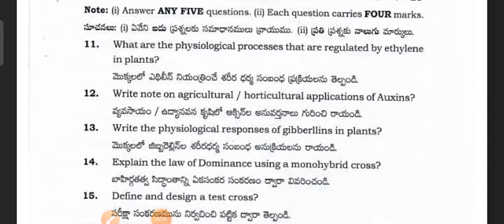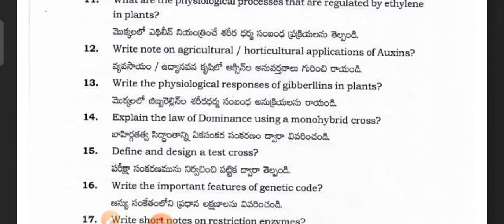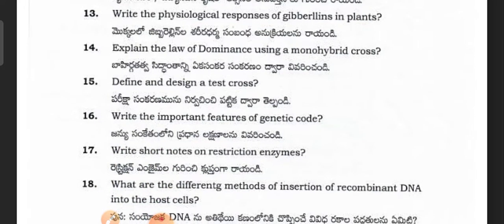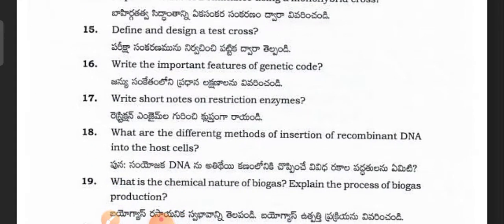Next, Section B questions — answer any five, each question carries four marks. What are the physiological processes regulated by ethylene in plants? Write a note on agriculture and horticulture applications of auxins. Write about the physiological responses for gibberellins in plants. Explain the law of dominance using a monohybrid cross. Define and design a test cross.